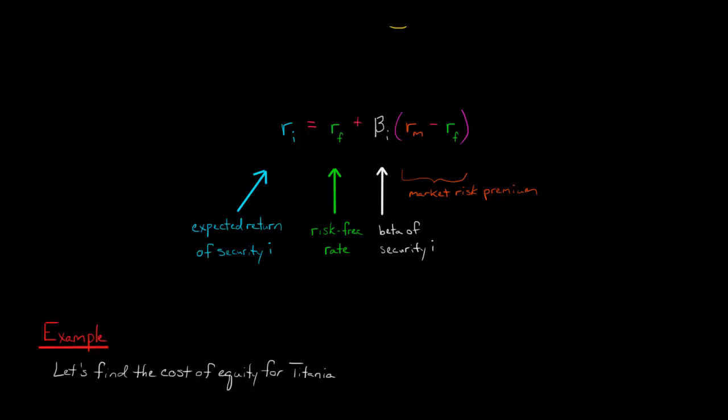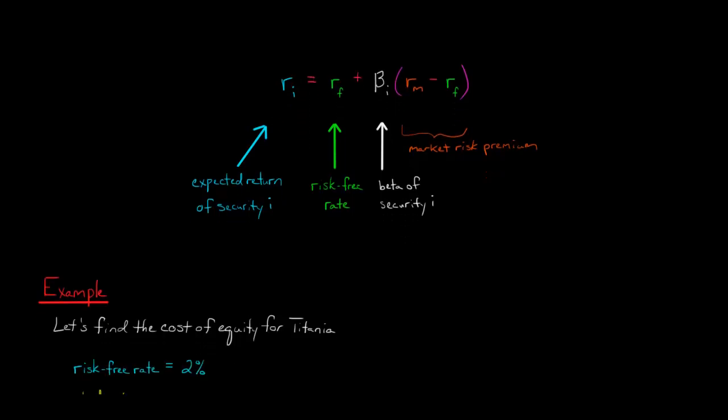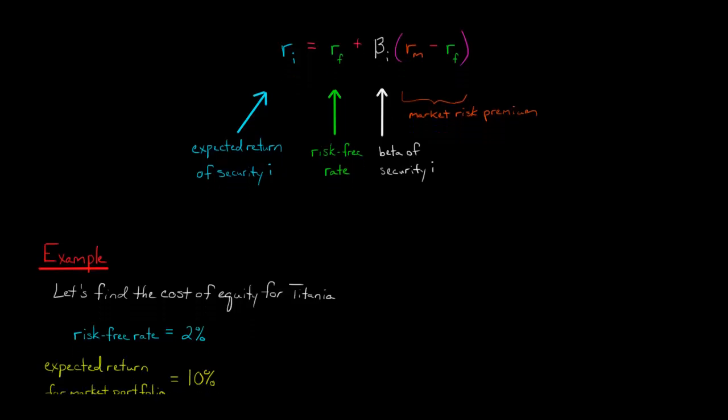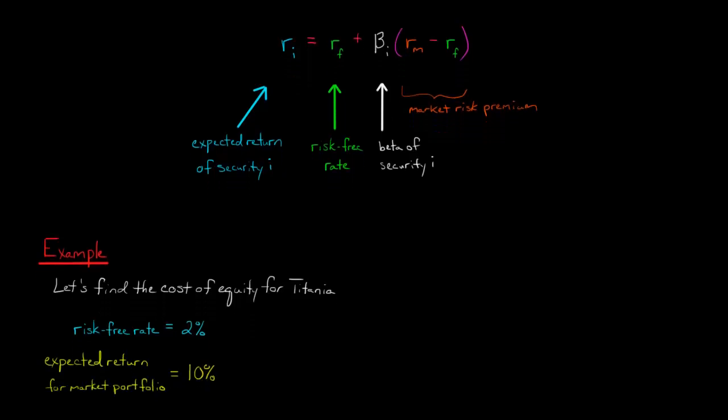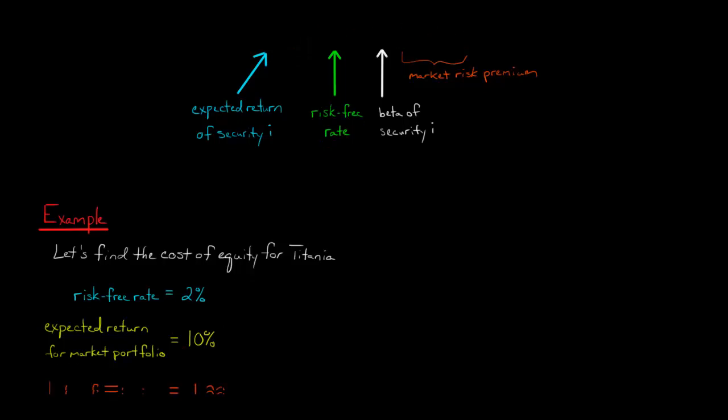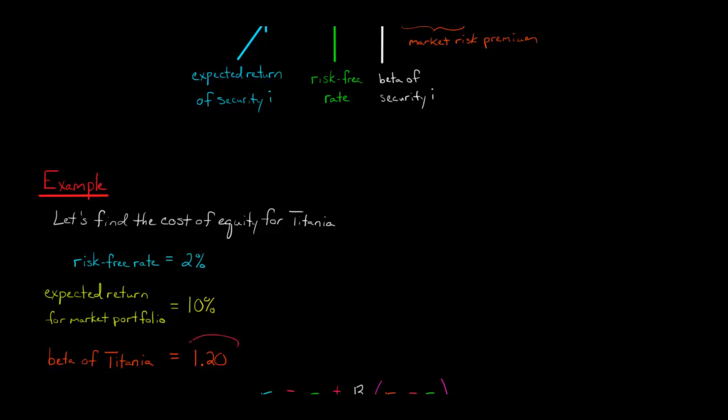Because that's all pretty abstract. Let's take a fictional company called Titania, and we'll estimate the cost of equity capital for Titania using the CAPM. So let's say that we've got our risk-free rate is 2%, the expected return for the market portfolio is 10%, and then we've got the beta of Titania, which is the measure of systematic risk of this company, of the stock, is 1.20.